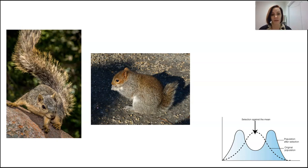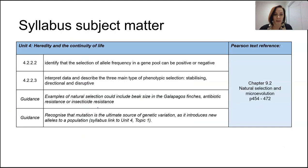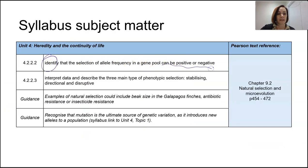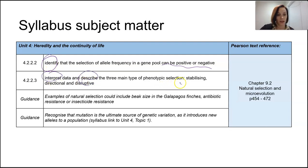Our focus here is identifying positive and negative selection, but also interpreting data and describing the stabilizing, directional, and disruptive types of selection — there are two cognitive verbs to keep in mind.